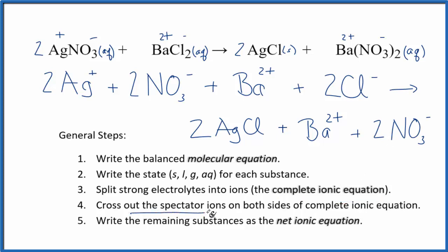Now we cross out the spectator ions - they're on both sides, in the reactants and products. Let's see: Ag+ we don't have on both sides. NO3- we have 2 in the reactants and 2 in the products, so cross those out. We have the barium ion here and in the products again, so cross it out. Everything else is unique, and that gives us the net ionic equation.